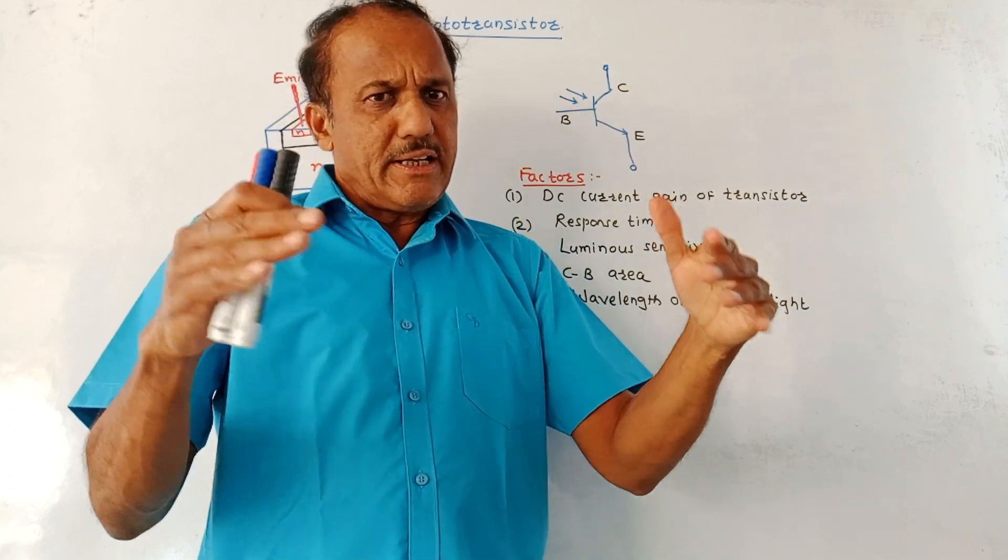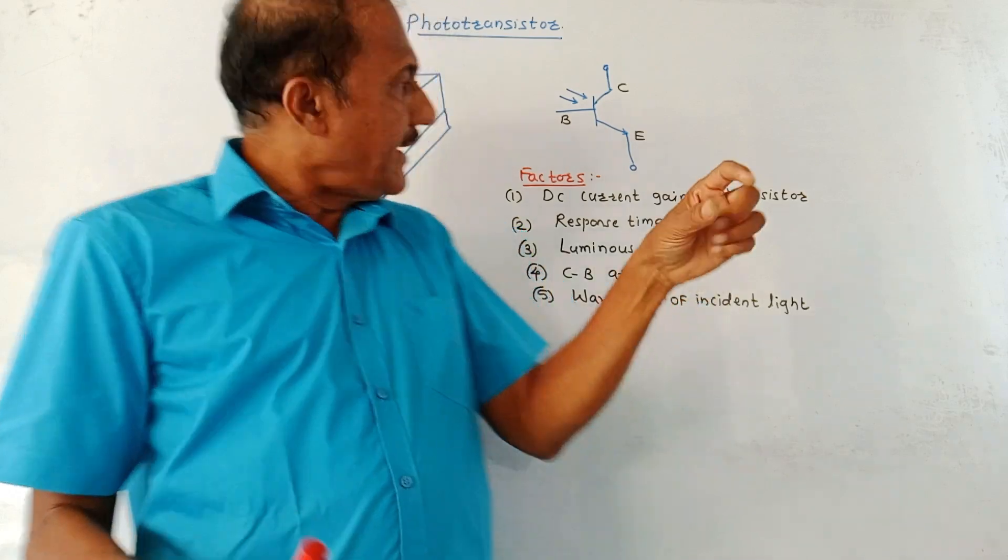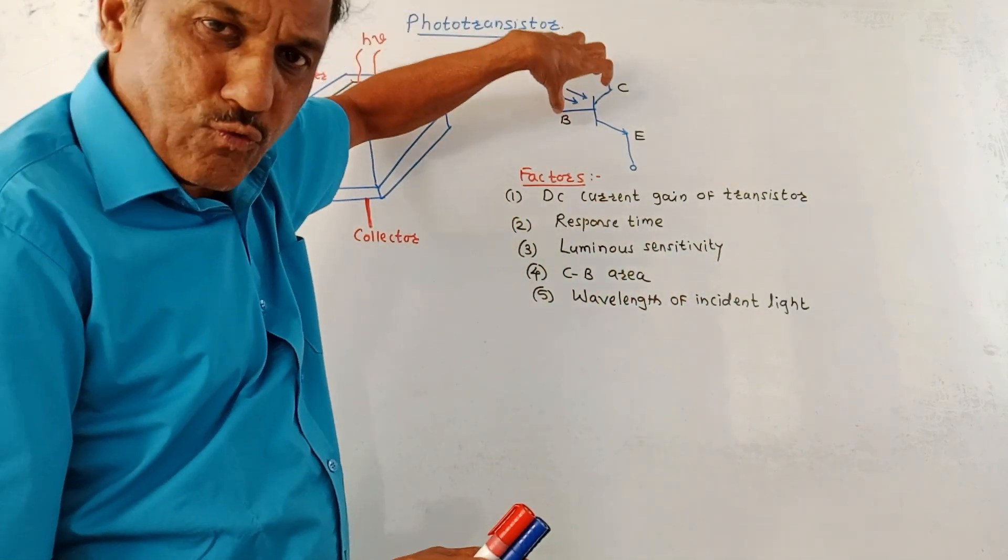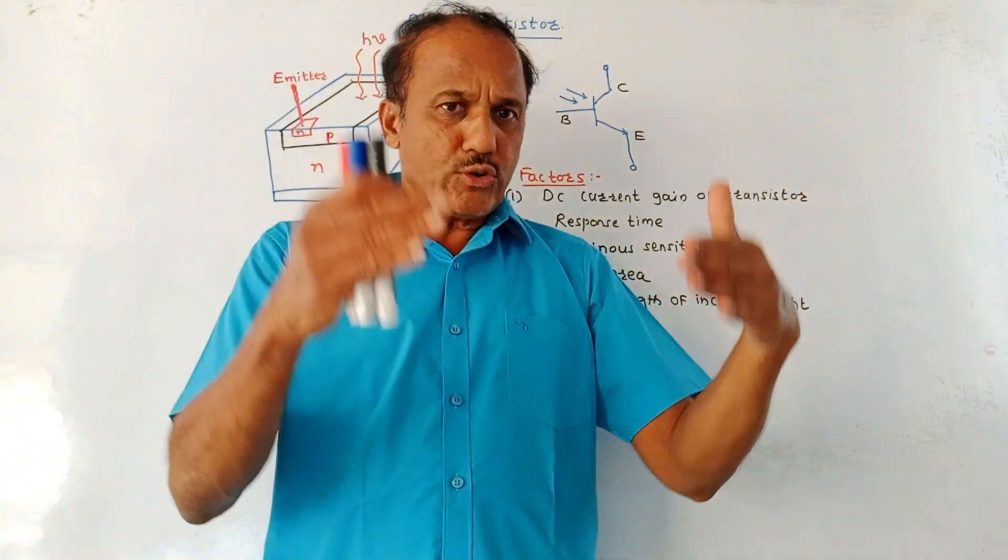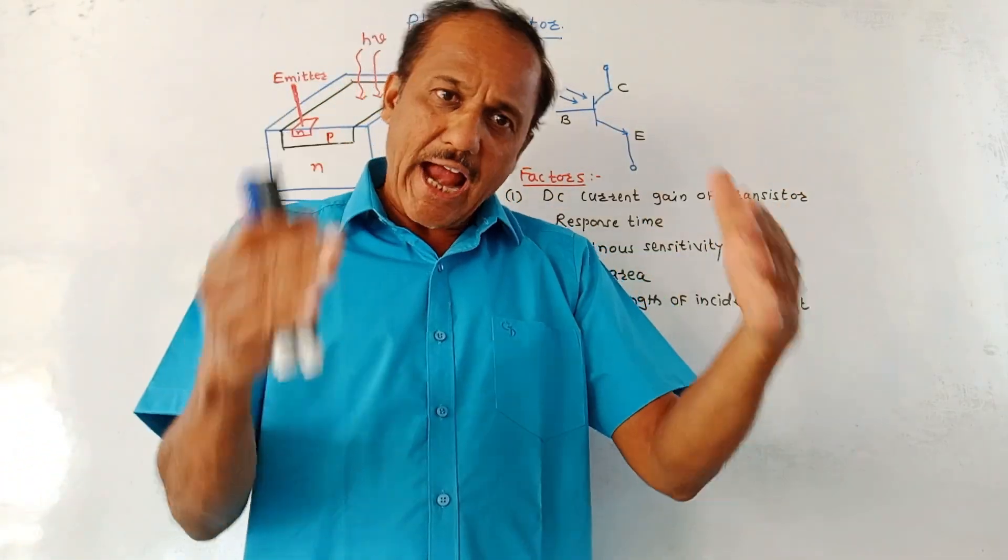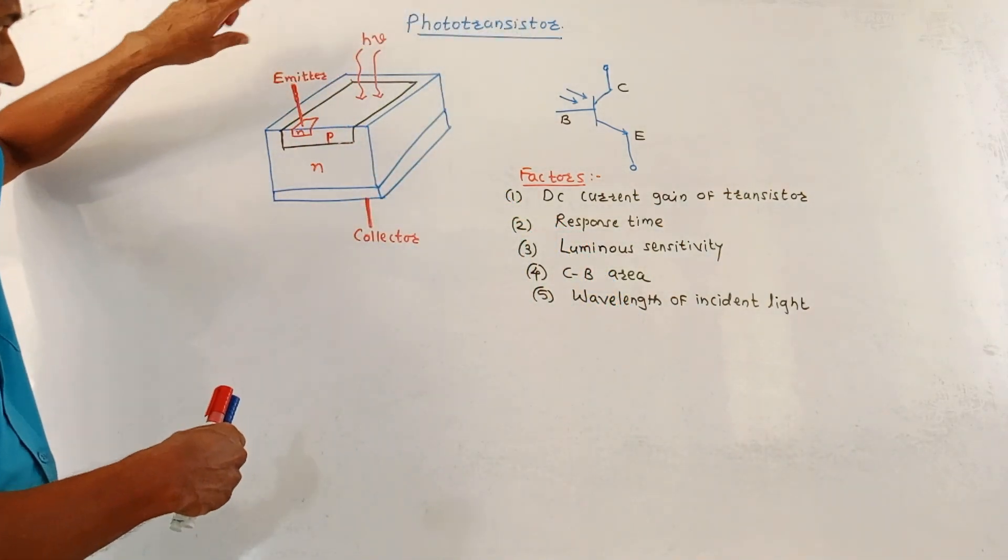Many times the base terminal is not shown. But in case of a phototransistor, incoming light is allowed to fall on the base terminal. Like the normal transistor, phototransistor provides the gain and you are getting the amplified output. This is the construction of the phototransistor.